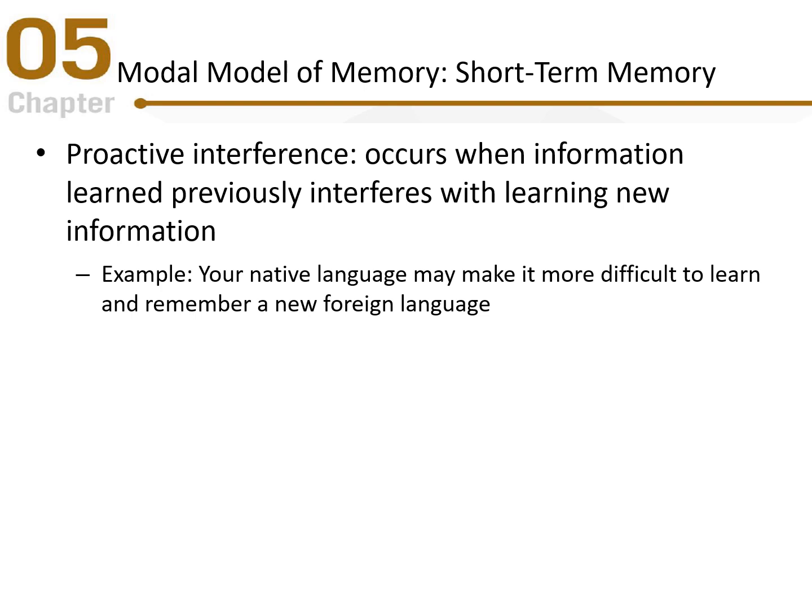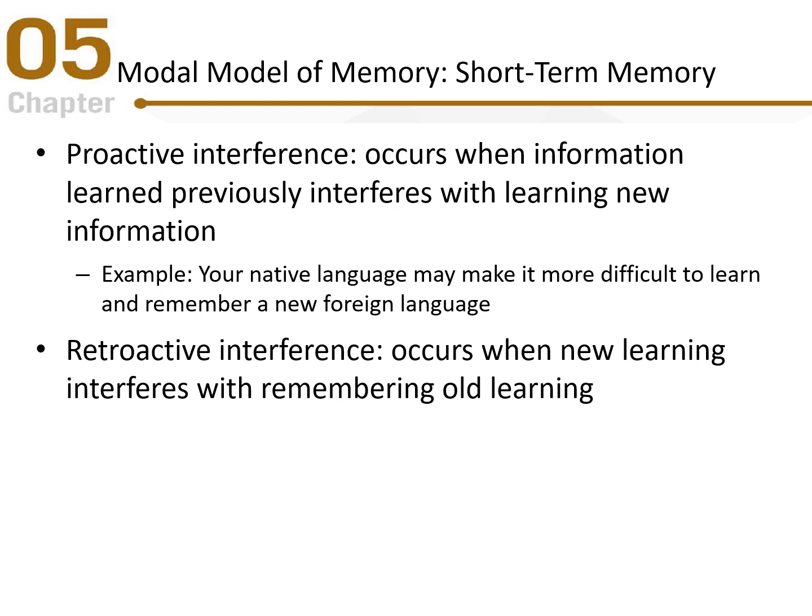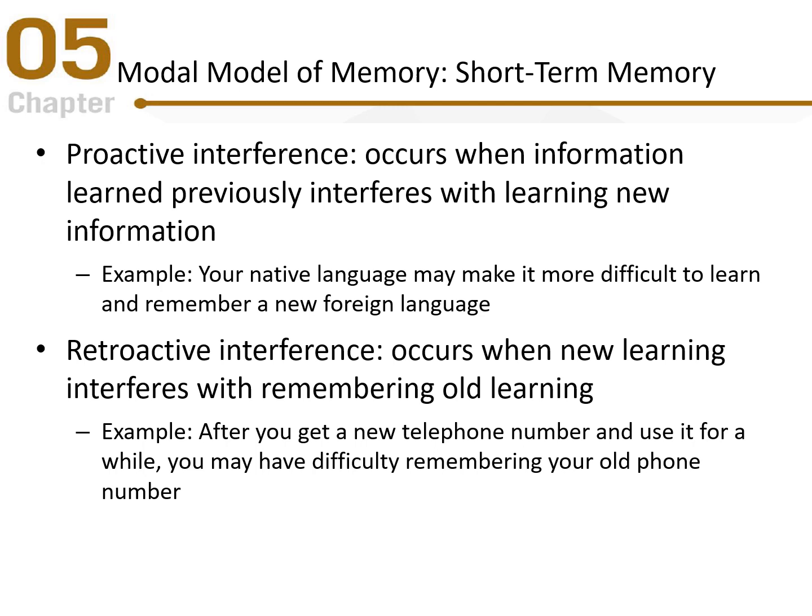Retroactive interference is the opposite — new learning interferes with remembering old learning. For example, after getting a new telephone number and using it for a while, you may have difficulty remembering your old number. Which type of interference dominates is probably situation-dependent and related to which piece of information you use more frequently.